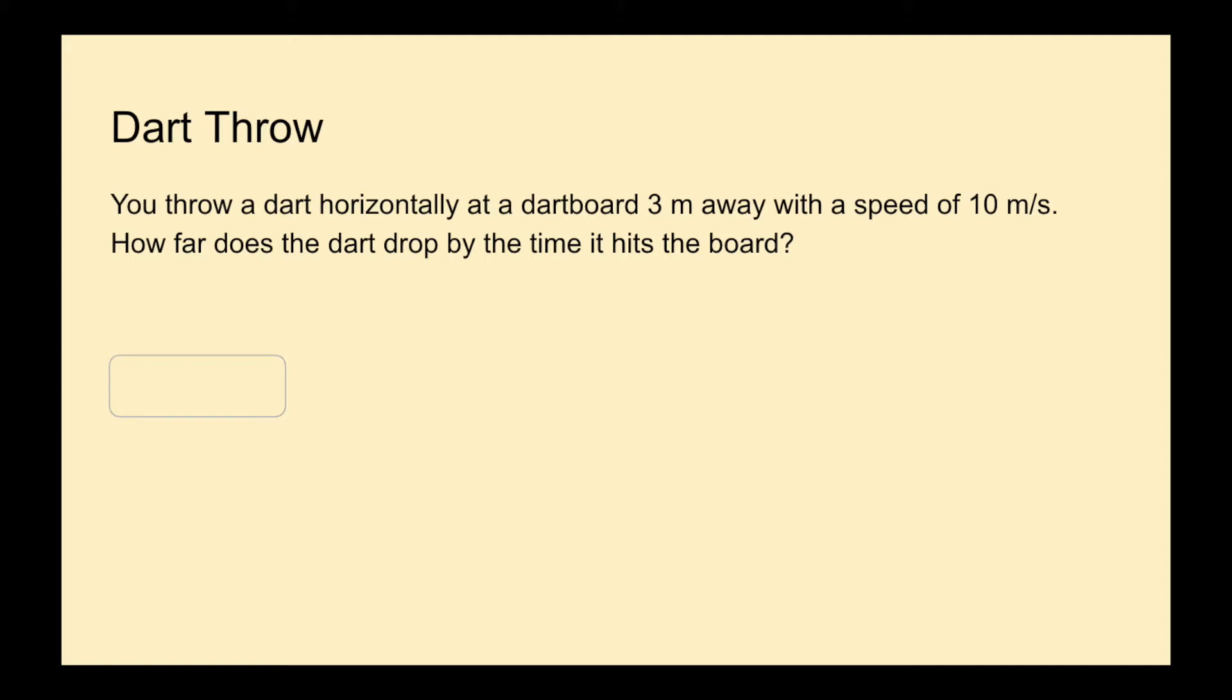You throw a dart horizontally at a dartboard three meters away with a speed of 10 meters per second. How far does the dart drop by the time it hits the board?